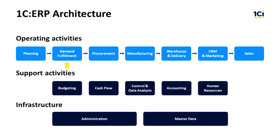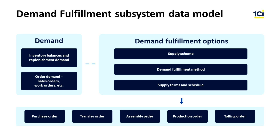The demand fulfillment subsystem defines the source and supply dates for merchandise, production materials, and components. The setup of this subsystem includes two main objects: the supply scheme and the demand fulfillment method. The supply scheme defines the source department for the inventory item and the demand fulfillment method. You assign the supply scheme to an SKU and to a warehouse. The demand fulfillment method determines the sourcing method for the SKU — e.g., purchase, production, or transfer — and the supply lead time.